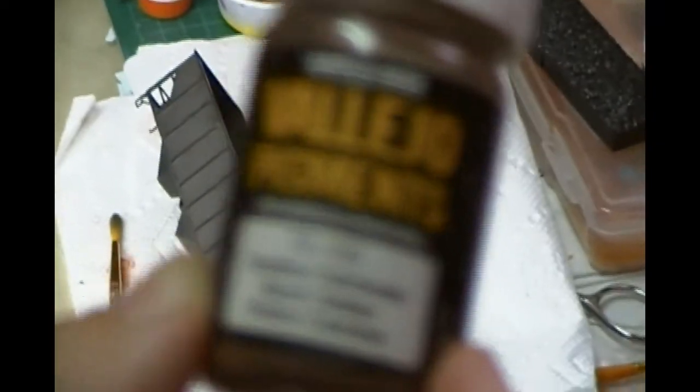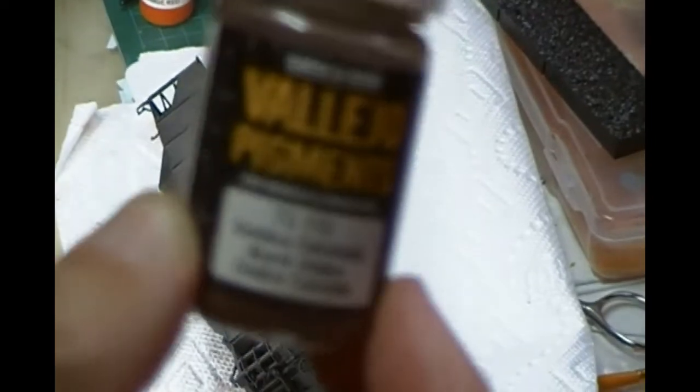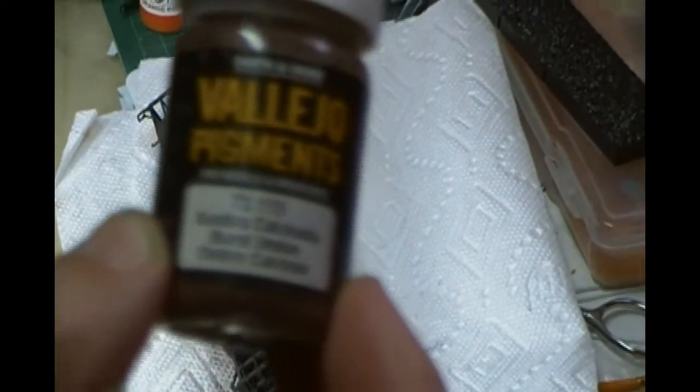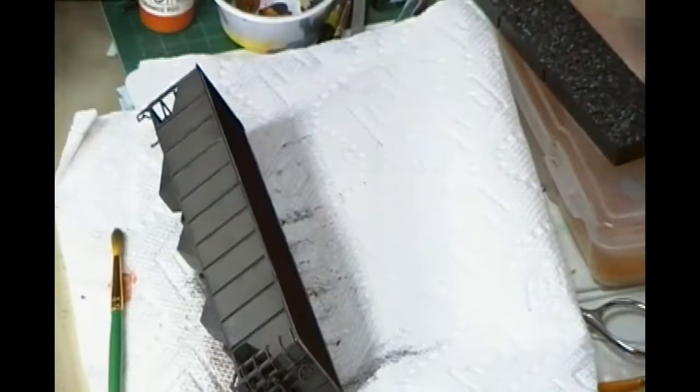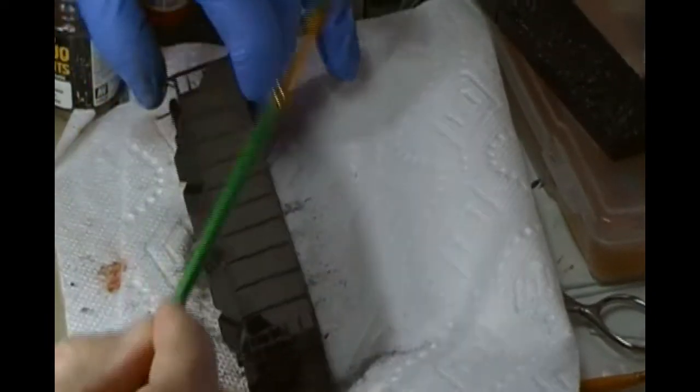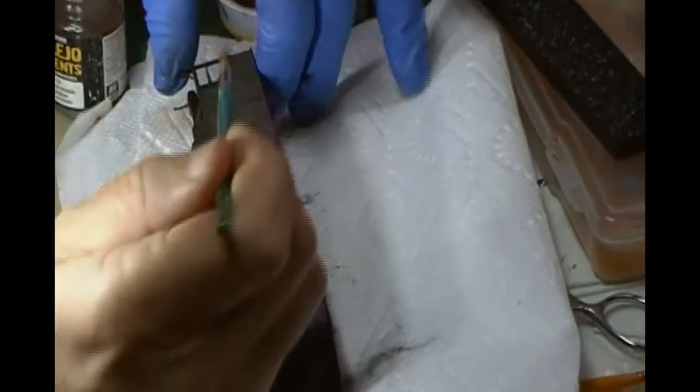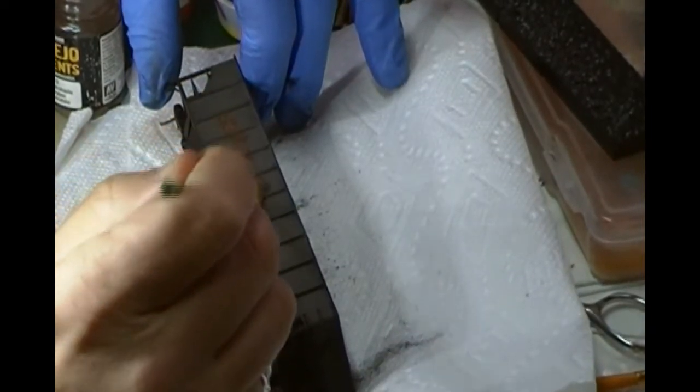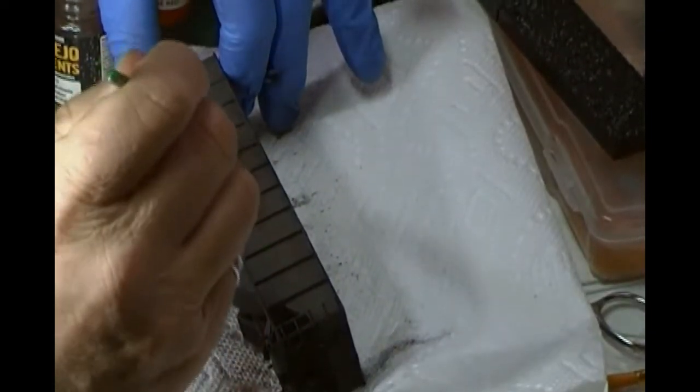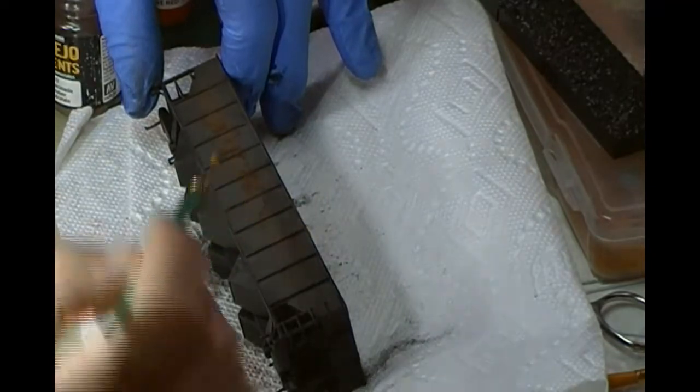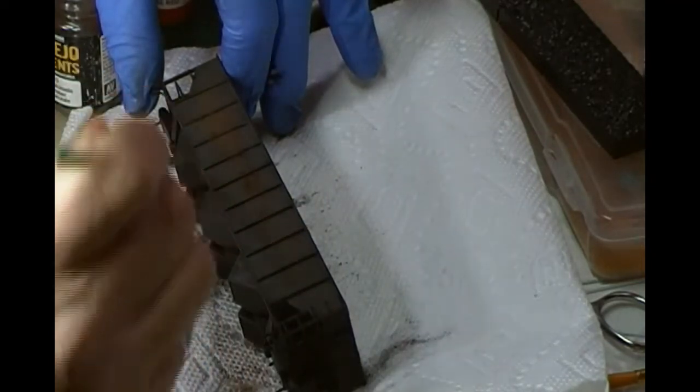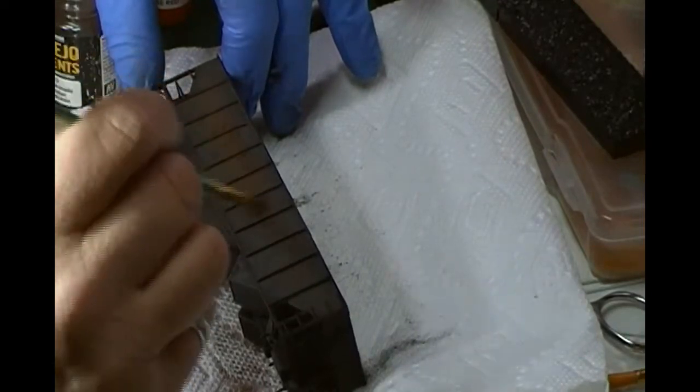So next up, I'm going to use a Vallejo pigment. This is burnt umber. And this will just create a nice metallic color to the gondola. So what we're doing here is putting it in the middle section, because this top bit is protected. And as you'll see, we'll start to move down a bit later on when we use the next color.